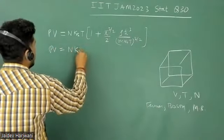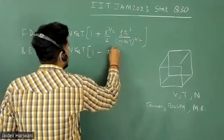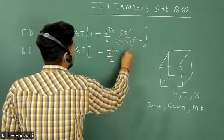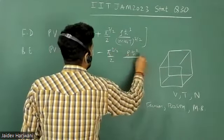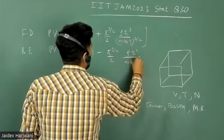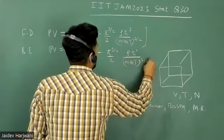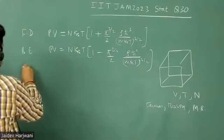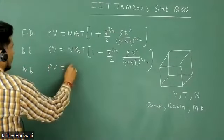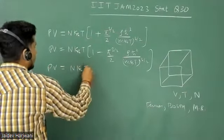PV is equal to NkBT times quantity 1 minus pi to the power 3 by 2, divided by 2, times rho h-bar cube over mkBT to the power 3 by 2. And for classical gas, we all know, PV is equal to NkBT.